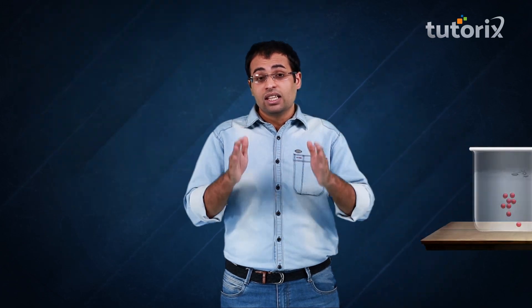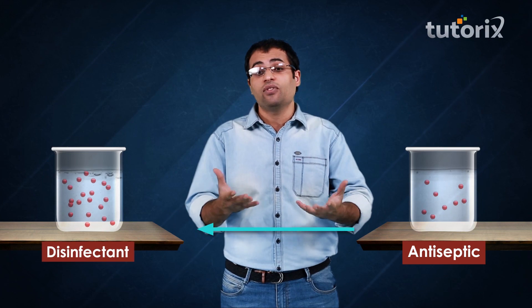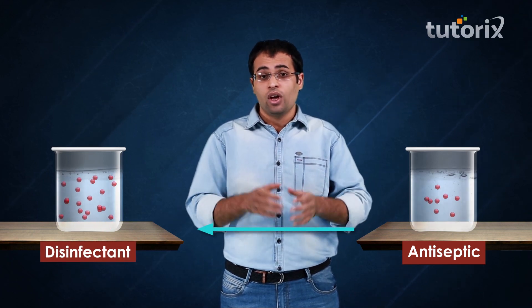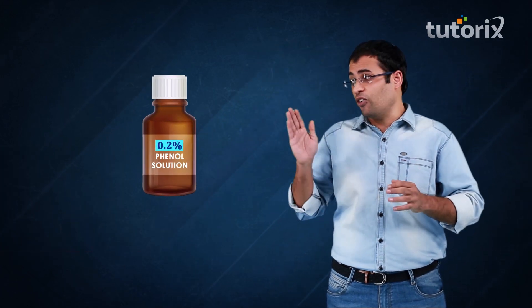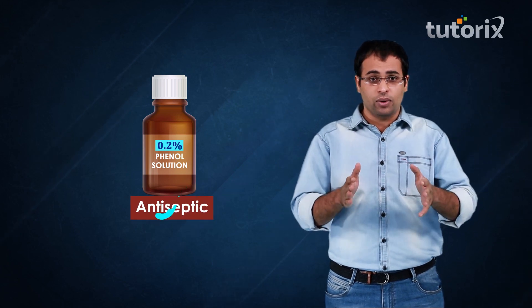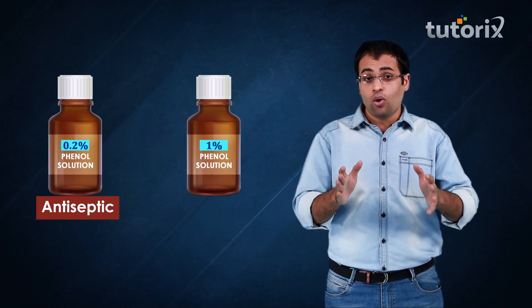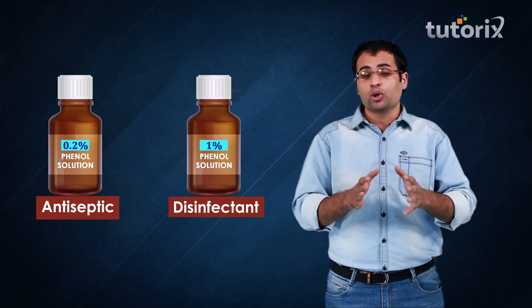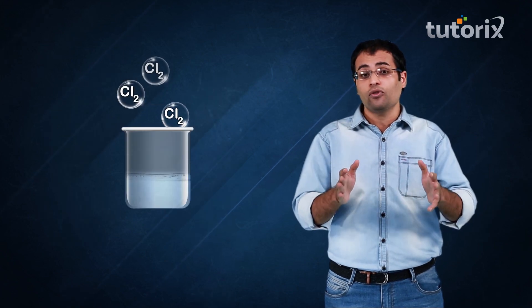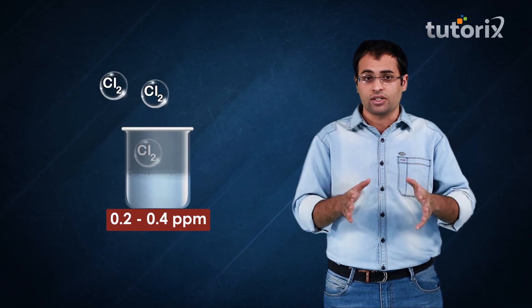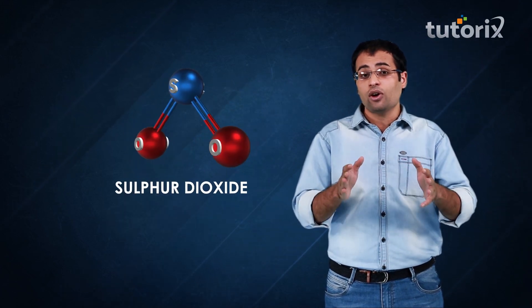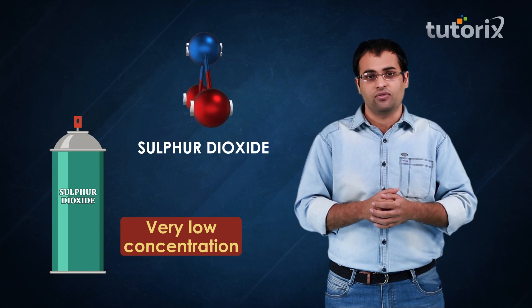Here I want to highlight an important point: the same chemical which acts as an antiseptic in lower concentrations becomes a disinfectant in higher concentrations. For example, a 0.2% solution of phenol acts as an antiseptic, however a 1% solution of phenol acts as a disinfectant. Other examples of disinfectants are a solution of chlorine in 0.2 to 0.4 parts per million concentrations, and sulfur dioxide in low concentrations.